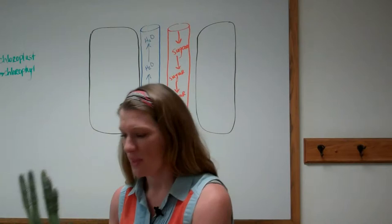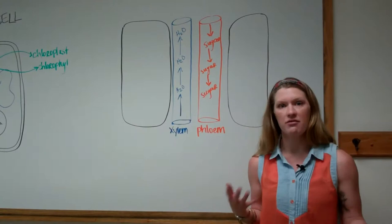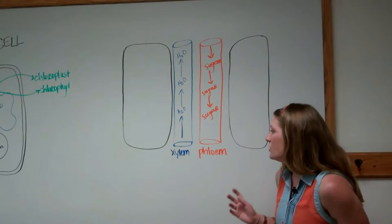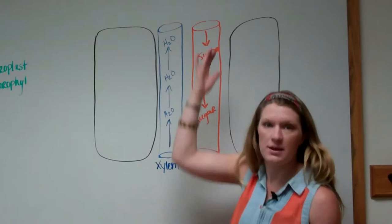Well, that's where xylem and phloem come in. Xylem and phloem are a vascular system. Just like animals have a vascular system — a way of transporting nutrients through the body — so do plants. Animals have veins and arteries; plants have xylem and phloem. Xylem is responsible for moving water from the roots to the tips of plants where photosynthesis occurs.